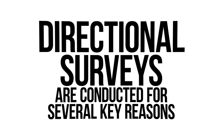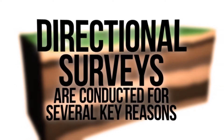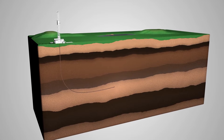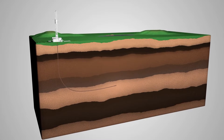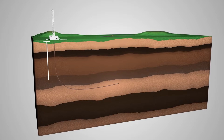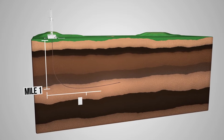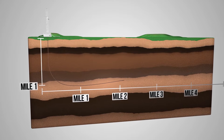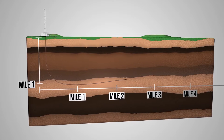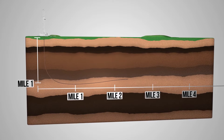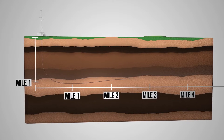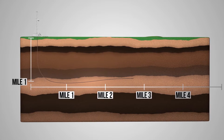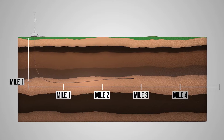Directional surveys are conducted for several key reasons. It all boils down to simply knowing where the wellbore is. The desired outcome is for the wellbore to be steered to hit a target, which can be over a mile down and more than three miles out from the drilling rig floor. We need to know how deep the drill bit is, what direction it is headed, and repeat that throughout the drilling process. That is what an MWD survey helps us do.